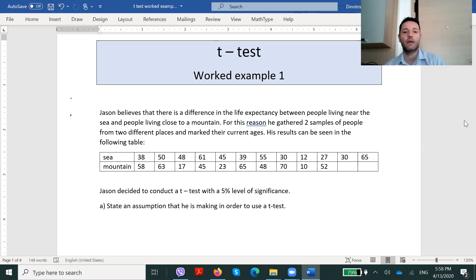So here's the example. Jason believes that there is a difference in the life expectancy between people living near the sea and people living close to a mountain. For this reason, he gathered two samples of people from two different places and marked their current ages. His results can be seen in the following table.